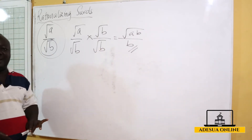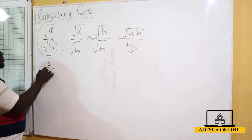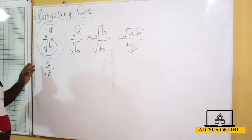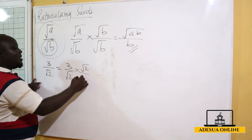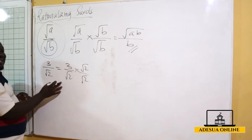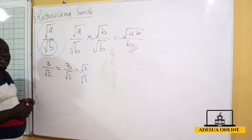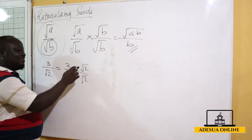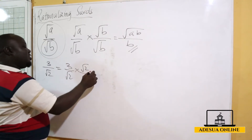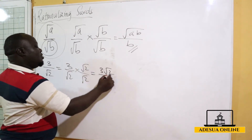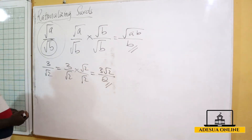Once you get a constant at the denominator, you have rationalized the surd. For example, if I have 3 over root 2, I multiply by root 2 over root 2 — which is equal to 1, so it doesn't change the value. This gives 3 root 2 over 2, since root 2 times root 2 equals 2.